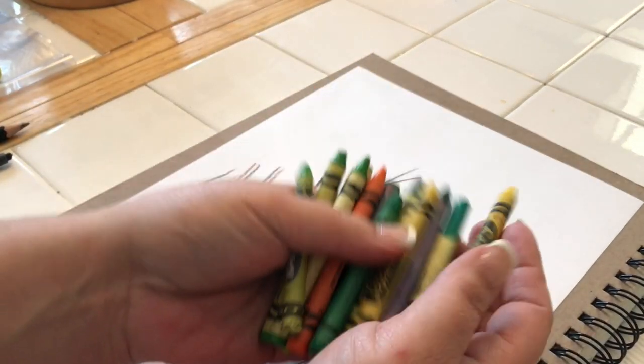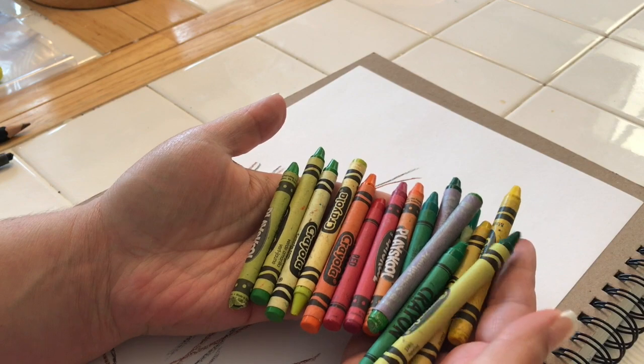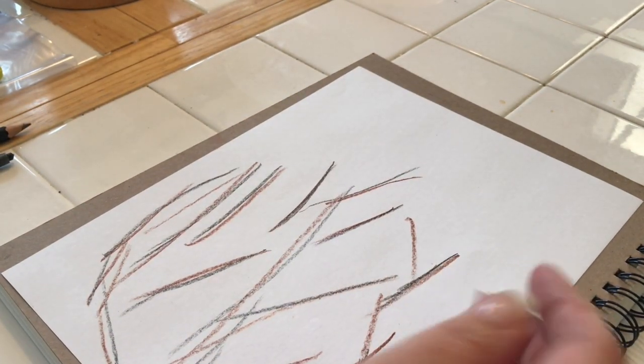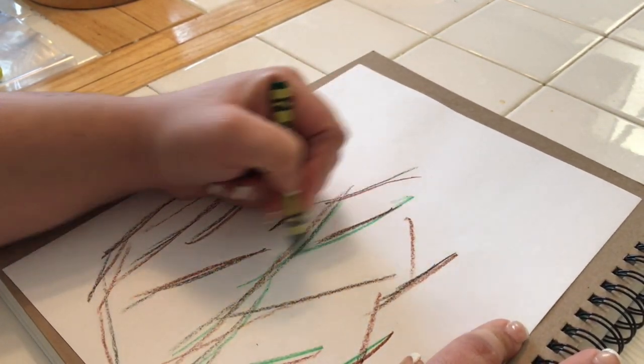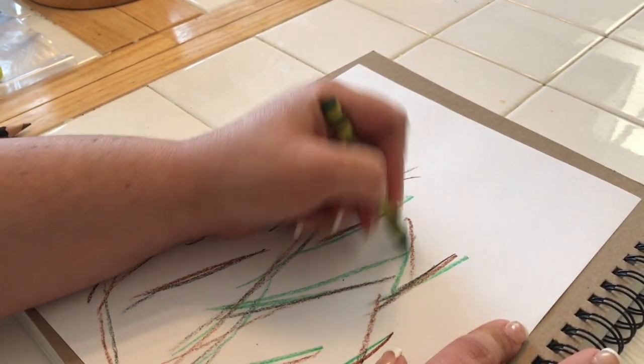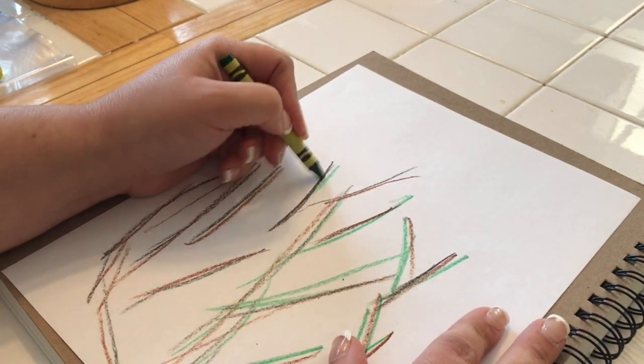So you'll see that I have lots of greens, yellows, oranges, reds. I even have a glitter crayon in there because why not? So you'll pick whichever greens you want. Go ahead and start adding some of those colors to your design that you've created.